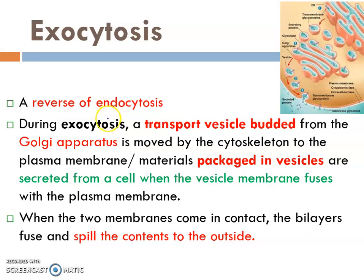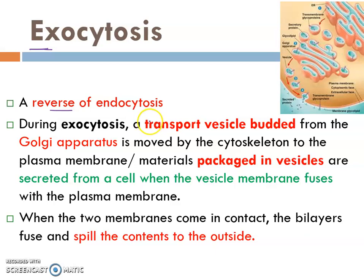For exocytosis, the prefix 'exo' means from inside to outside. That is why exocytosis can be said to be the reverse of endocytosis — it is the opposite, meaning particles need to go out from the cell. Basically, exocytosis is when the cell removes packaged particles coming from the Golgi apparatus out from the cells in order to implement any physiological process.